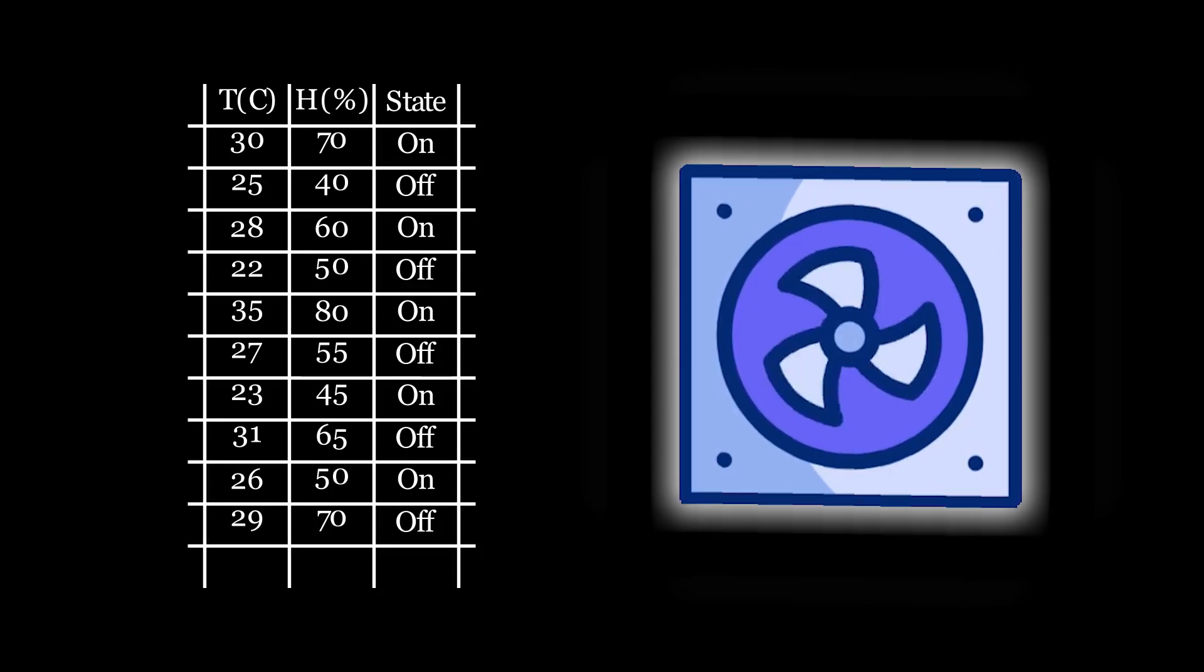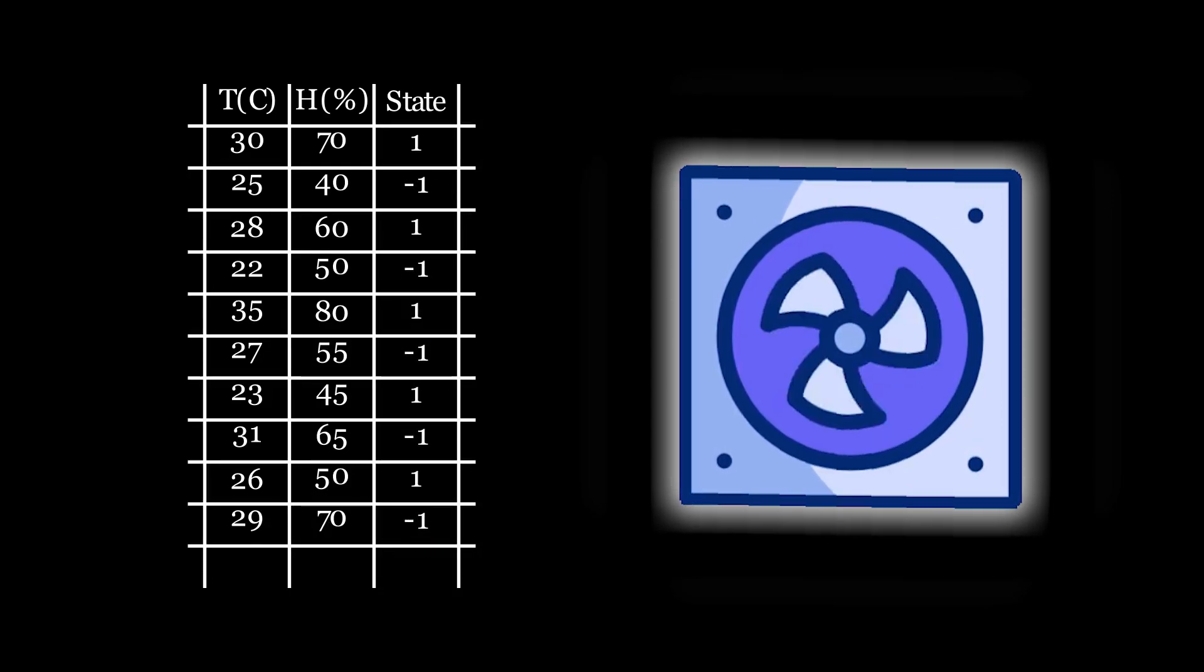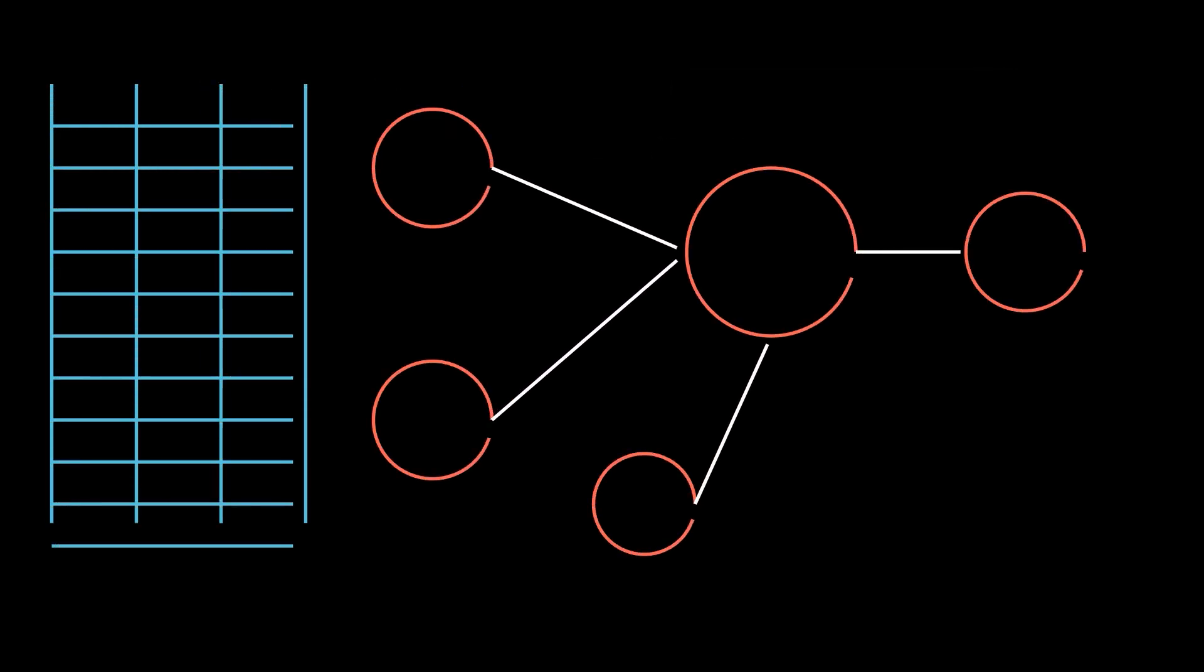We'll obviously need temperature and humidity data, but we also need the state of the AC in these conditions. Is it on or off? This way our neural network can actually learn. The last thing we need to do is replace on and off with something more math-friendly: minus one for off and one for on. And our data is ready.